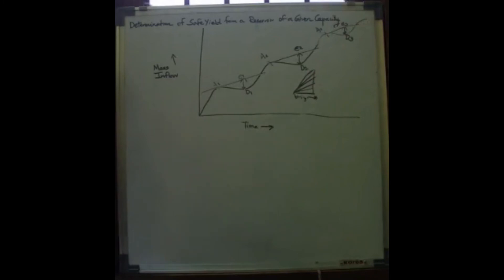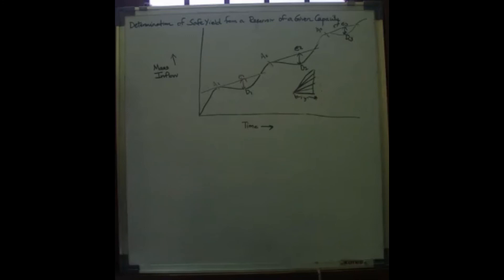Measure the slopes of each of these tangents. The slope of each tangent indicates the yield which can be attained in each year from the reservoir of given capacity.